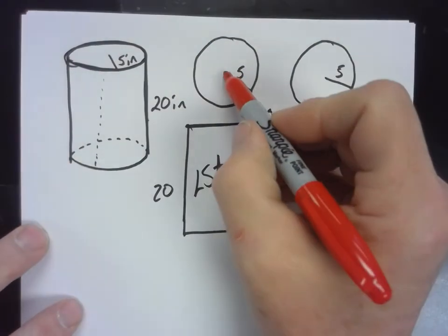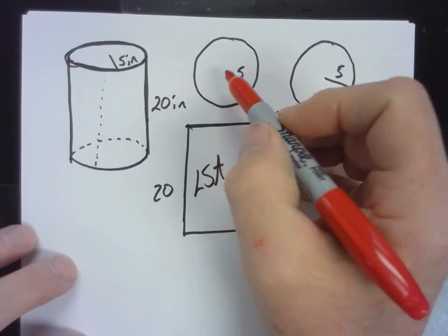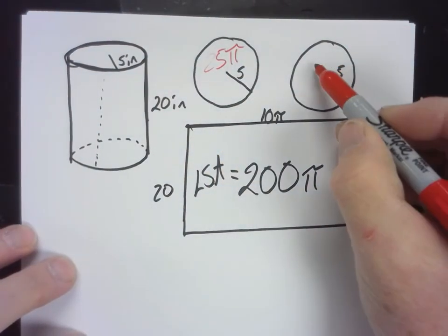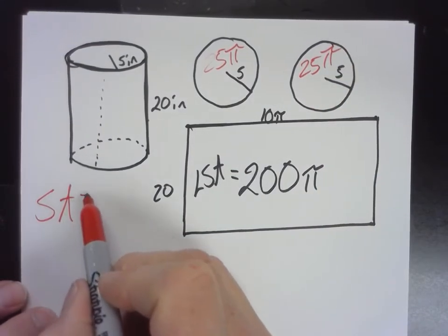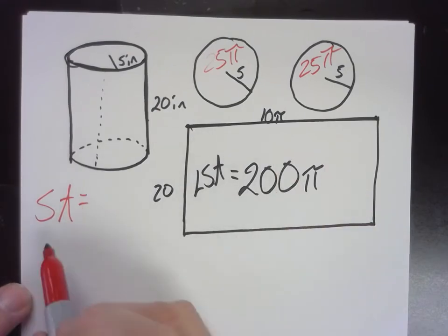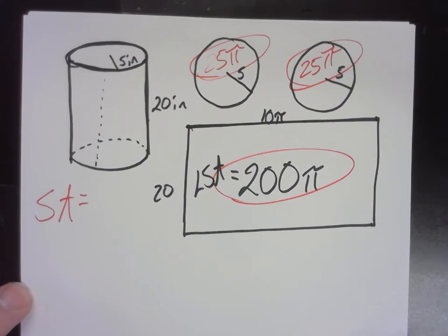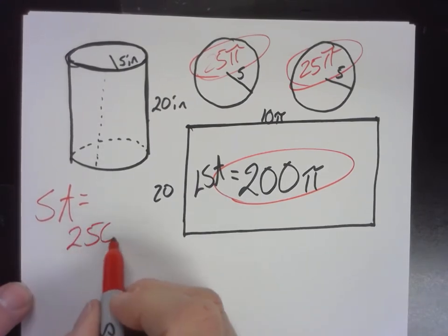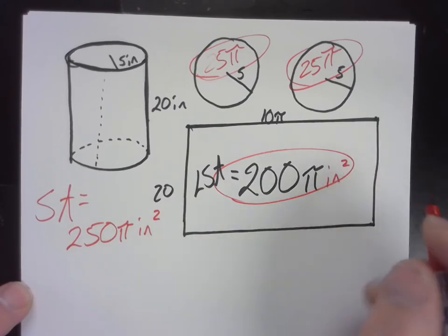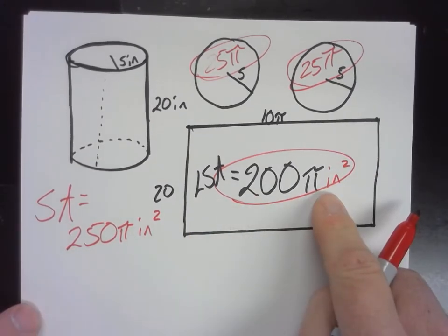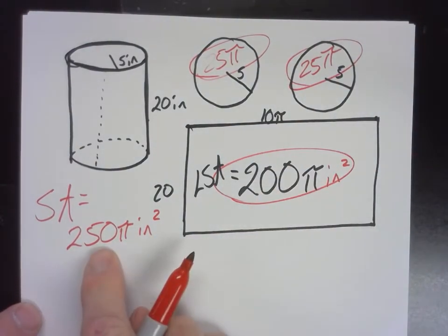What about the area of this circle? Come on, you know it. Good, 25 pi. What about the area of this circle? 25 pi. So, the total surface area, then, would be 25 pi plus 25 pi plus 200 pi. 250 times pi square inches. Okay, so this is the lateral surface area. And then, if you add them all together, that is the total surface area.